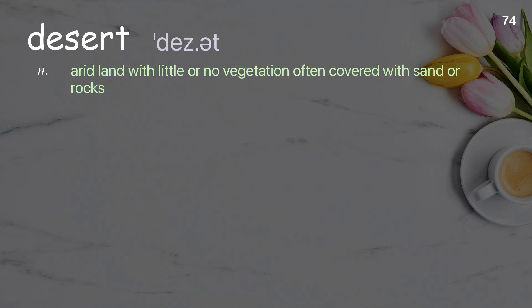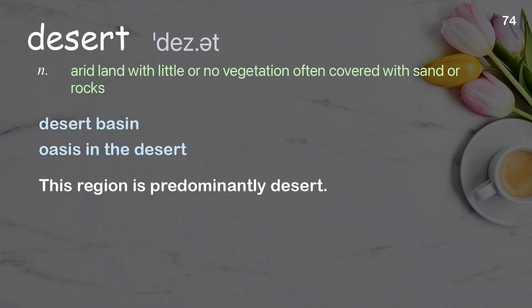Desert. Arid land with little or no vegetation, often covered with sand or rocks. Examples: desert basin; oasis in the desert. This region is predominantly desert.